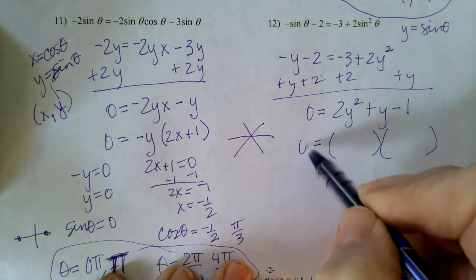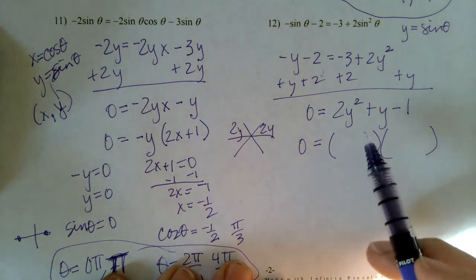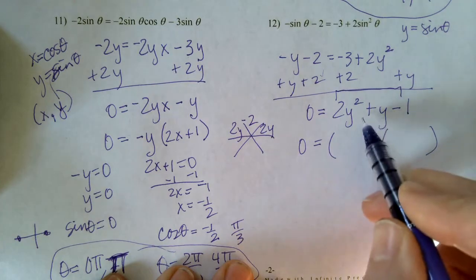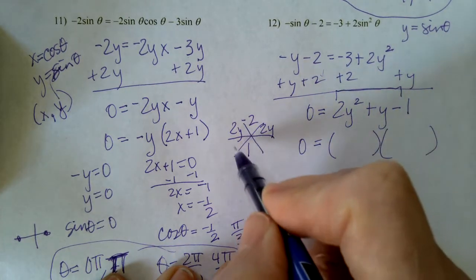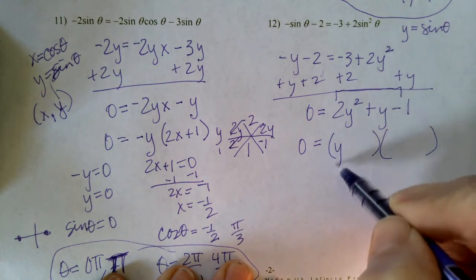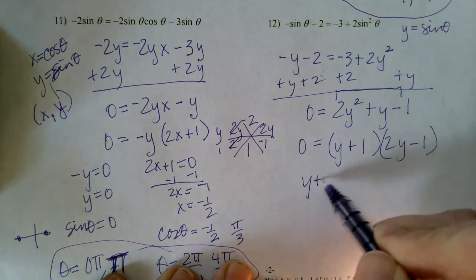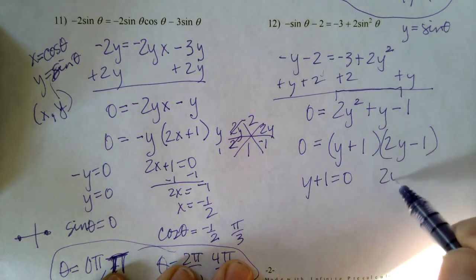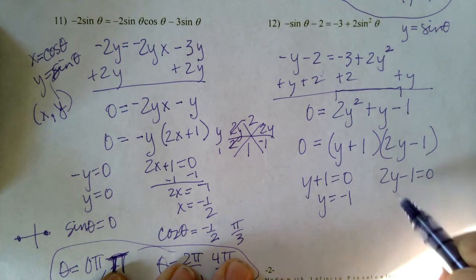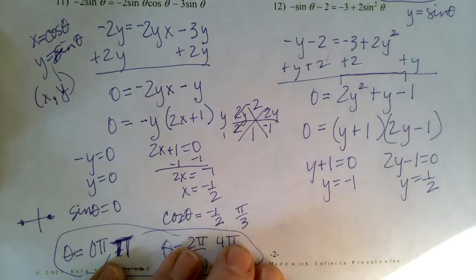And then I will go ahead and factor however I need to factor. This one is a good candidate for the snowflake method. I need two numbers that multiply to be negative two and add to be positive one, and that's two and negative one. Remember, cancel if you can. So y and one. So I have y plus one, two y minus one. Again, I'll set those equal. Y plus one equals zero, two y minus one equals zero. So y is negative one and y is one half.